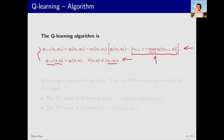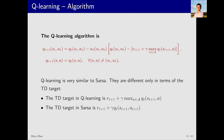In Q-learning, the TD target is r_{t+1} plus gamma times the maximum of Q_t(s_{t+1}, a), where we optimize over a. In comparison, SARSA selects a based on the current policy instead of optimizing over it.